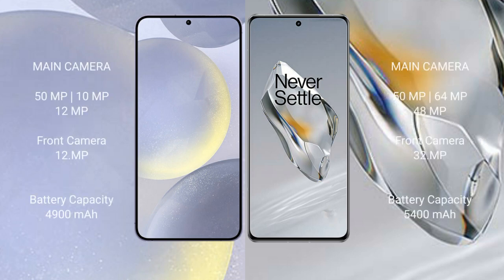The Samsung Galaxy S24 Plus features a triple rear camera setup: 50MP plus 10MP plus 12MP, and a 12MP front camera. The OnePlus 12 features a triple rear camera setup: 50MP plus 64MP plus 48MP, and a 32MP front camera. The Samsung Galaxy S24 Plus has a 4900mAh battery with 45W fast charging support.